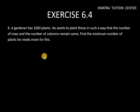A gardener has thousand plants. He wants to plant these in such a way that the number of rows and number of columns remain same. Find the minimum number of plants he needs more for this.